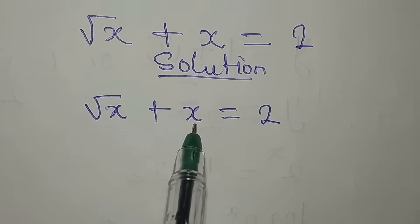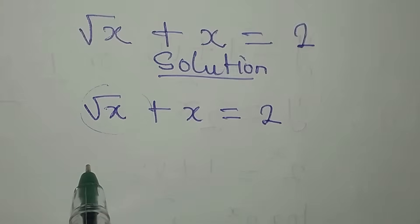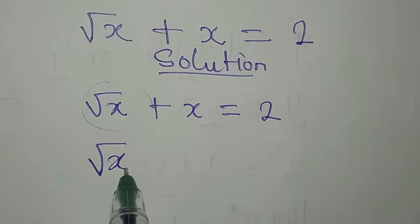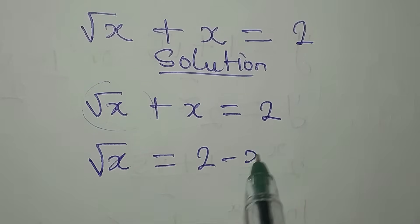Now what do we do? How do we deal with this? I want to take this x to the other side so that the square root will become the subject. So I'll have root x equals 2 minus x.